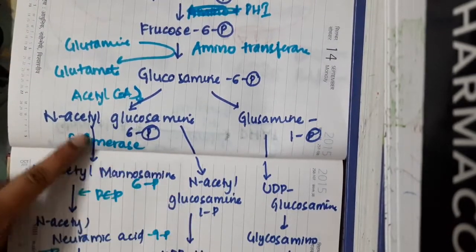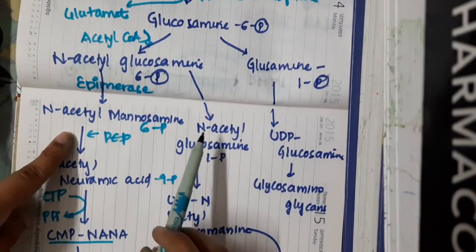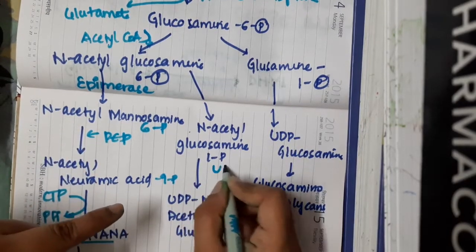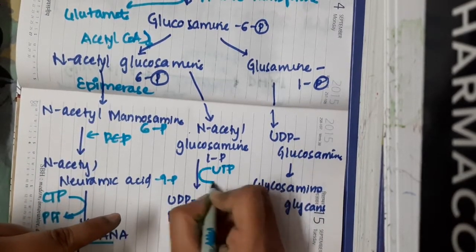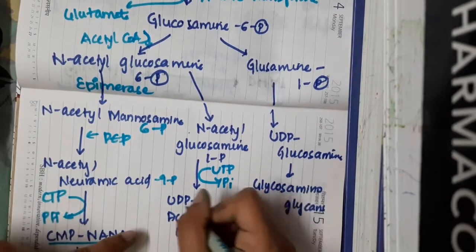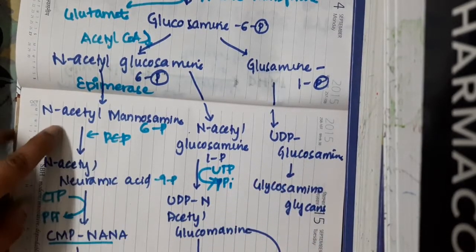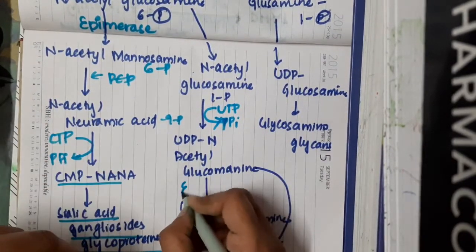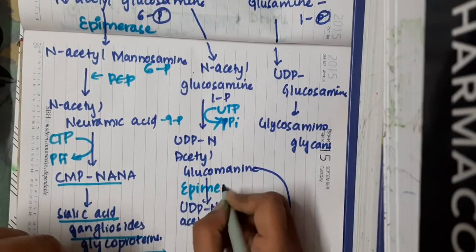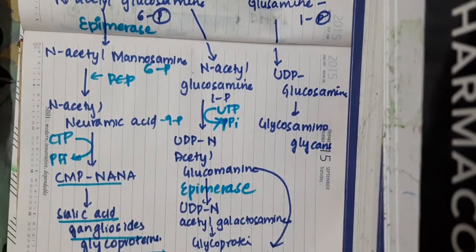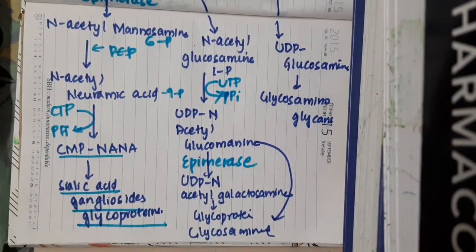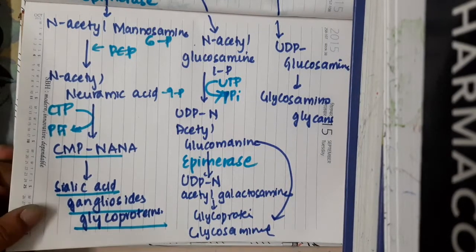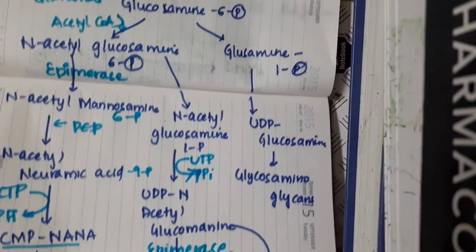N-acetylglucosamine-6-phosphate, by isomerization, forms N-acetylglucosamine-1-phosphate. This combines with UTP to form UDP-N-acetylglucosamine. In the presence of epimerase, it forms UDP-N-acetylgalactosamine, which results in the formation of glycoproteins and glycosaminoglycans.